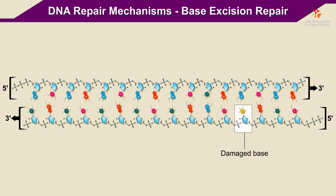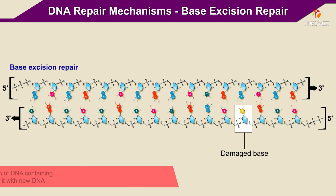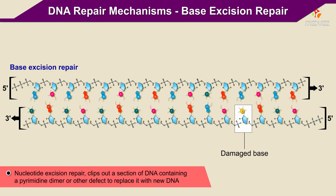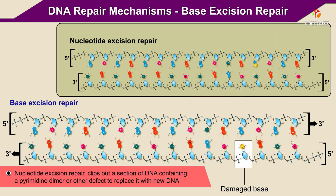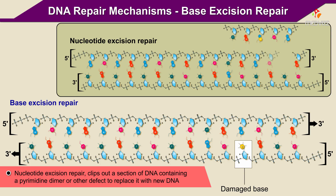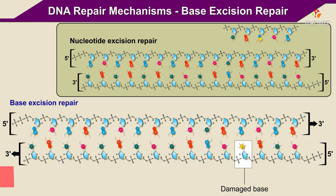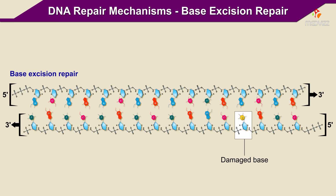Some damaged DNA bases are repaired by a system called Base Excision Repair. Base Excision Repair works differently from Nucleotide Excision Repair, which clips out a section of DNA containing a pyrimidine dimer or other defect to replace it with new DNA. Base Excision Repair acts on other kinds of defective DNA.